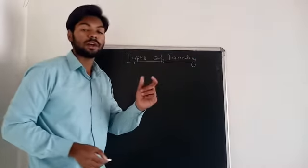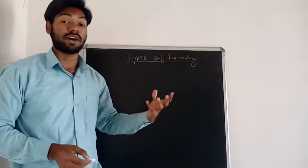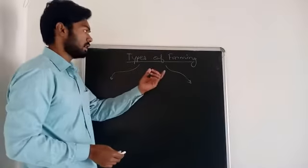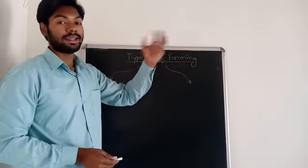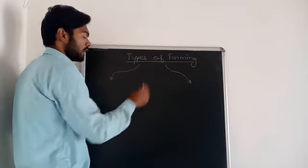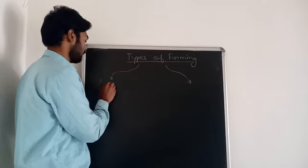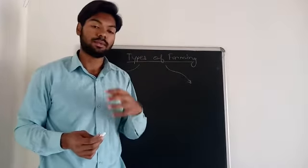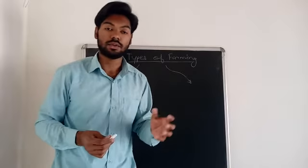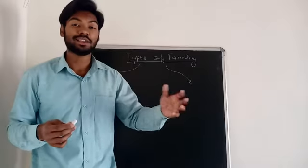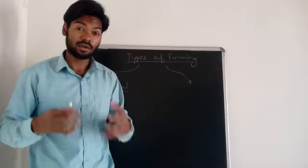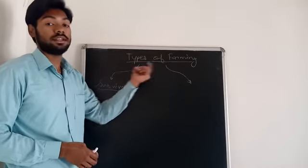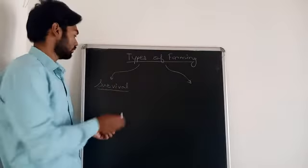Basically there are two perspectives of looking at farming. One type is cultivation of certain crops or plants to gain food material. One aspect of this farming is for the survival of ourselves, because we require food on a daily basis.